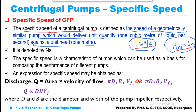It is the speed of the geometrically similar pump. So we will be making a geometrically similar model of the pump which is going to work against unit head and deliver one cubic meter per second of liquid — that is, at the rate of one cubic meter per second — for comparing the performance of different pumps.